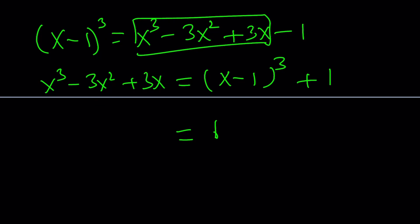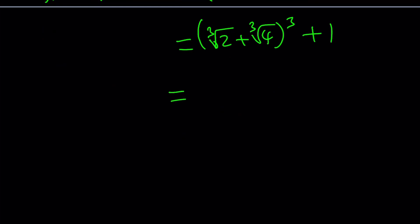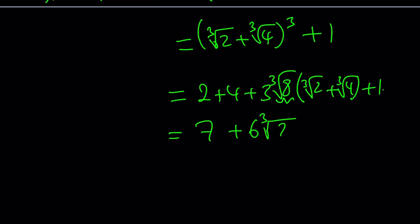So, cube root of 2 plus cube root of 4 is the same thing as x minus 1. So, I can just cube it and add 1, and I'll get the answer. And obviously, this is much better than the first method, isn't it? If you cube this one, you're going to get something like this. 2 plus 4 plus 3 cube root of 8. I'm using my shortcut. And then you're going to get this. And obviously, plus 1. 2 plus 4 plus 1 is 7. And then 6, because this is 2. 6 times cube root of 2 plus 6 times the cube root of 4. And guess what? That is the exact same thing that we got with the first method.